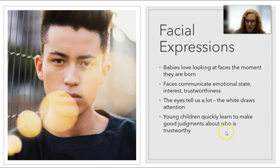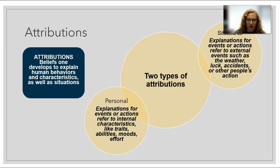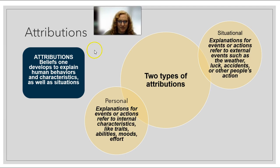Let's think about attributions. An attribution is a belief that you develop to explain human behaviors, characteristics, and situations. There are two types: personal and situational. A personal attribution says that behavior is related to somebody's internal characteristics — their traits, ability, mood, or effort. So we might say Joe won the scholarship because he was so smart, or because he worked really hard, or because he had a lot of talent.